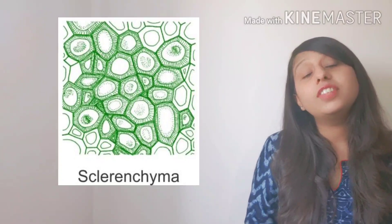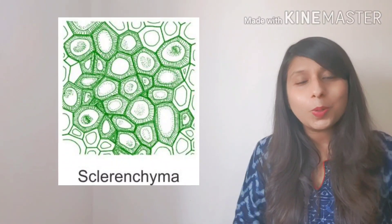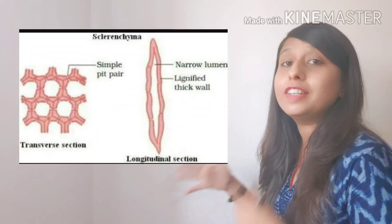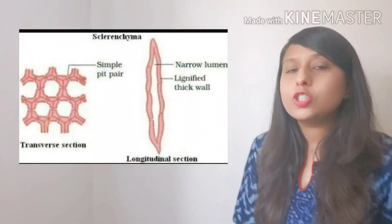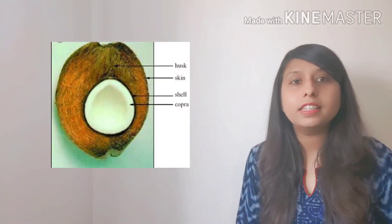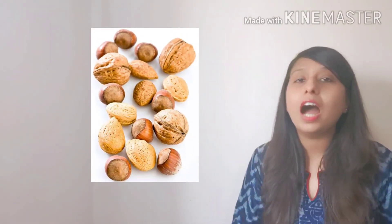The next tissue type is sclerenchyma. The cells of sclerenchyma tissue are all dead. The sclerenchyma tissue cells are mainly very thick-walled — the covering around the cell is of lignin, which makes the cell very thick and very strong. The cells of this tissue mainly provide strength to the plants. They are present in the husk of the coconut and also in the covering of nuts, which are very hard to break through, and in many other harder parts of the plant.